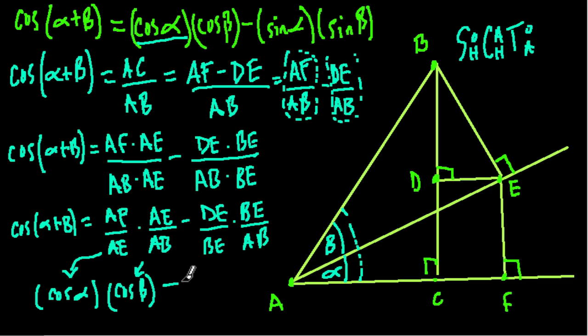Minus, what do we have over here? BE over AB. Here's BE over AB. That's the opposite and hypotenuse to angle beta. So that's the sine of beta. Sine SOHCAHTOA, opposite over hypotenuse. That's BE over AB. So this term right here is just going to be equal to the sine of beta.